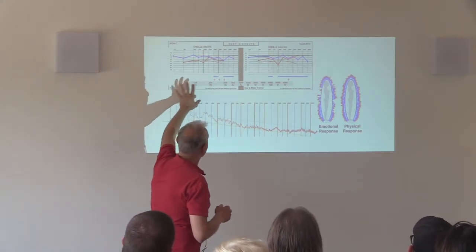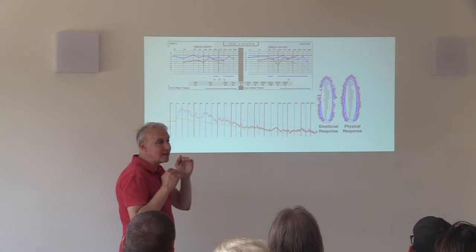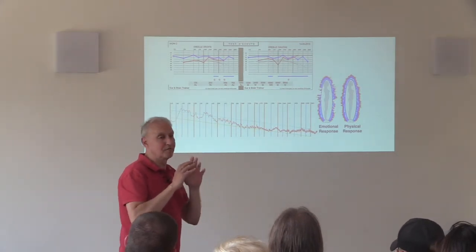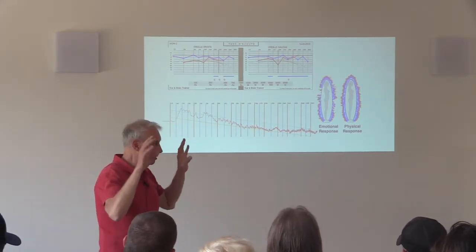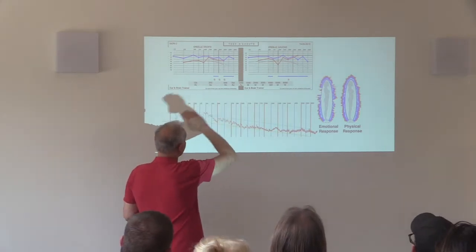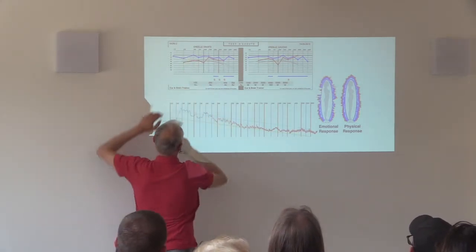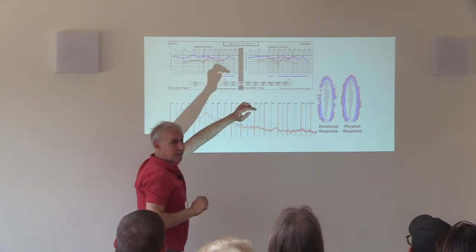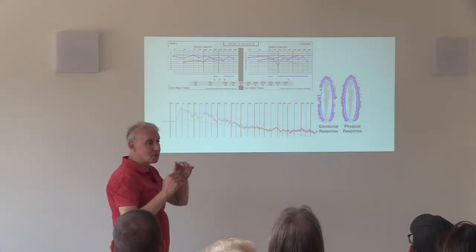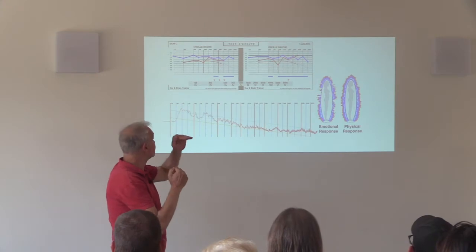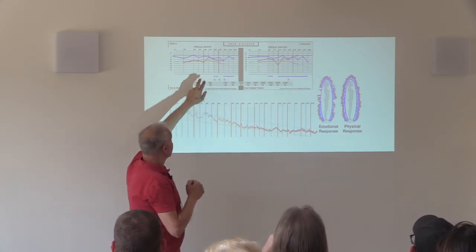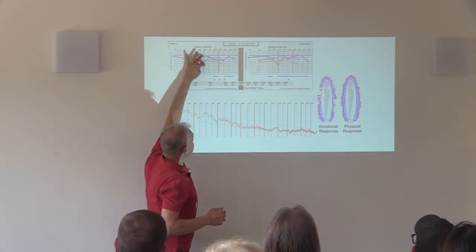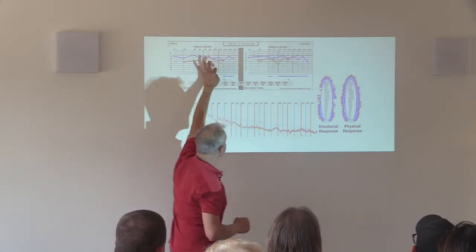Normally, if you're perfectly healthy and not stressed, you should have beautiful curves — the same thing on the blue and the red. But we get a lot of information from the difference between these two curves. At 1000 Hz, you see a big gap on both ears. It's related to the stomach — the third chakra.